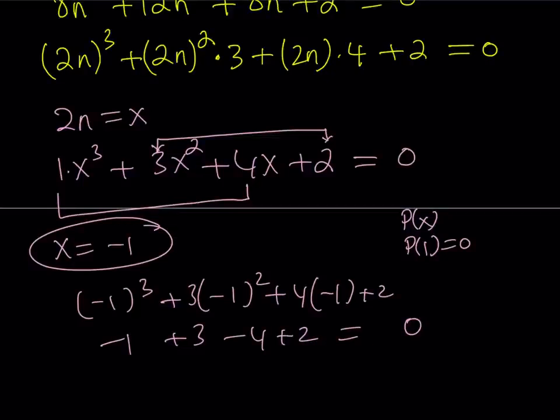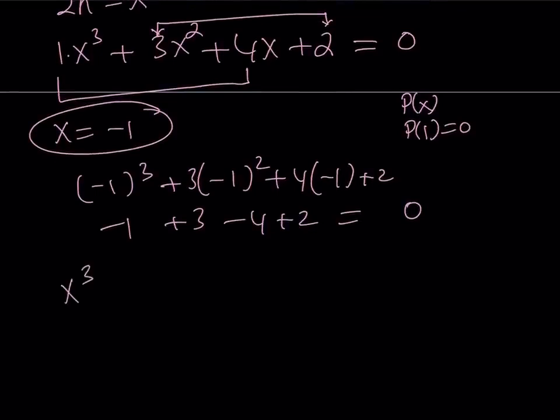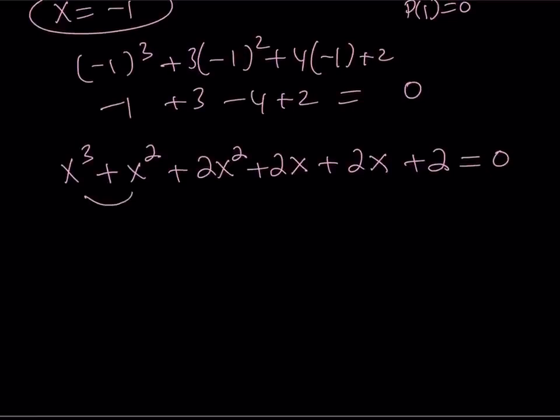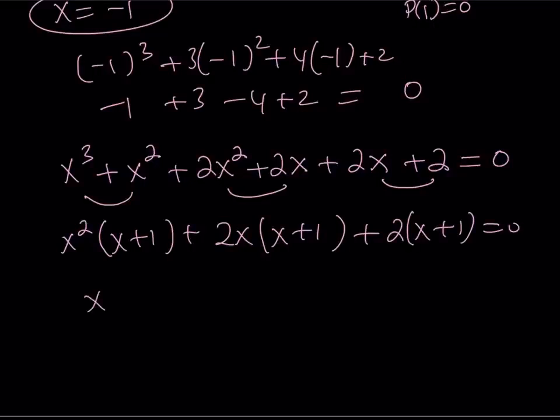So x = -1 is a solution of this equation, which is really nice because we can reduce the power. Let's go ahead and arrange these terms to reflect that. This is divisible by x + 1, which means x + 1 is a factor. We can factor by grouping: x²(x + 1) + 2x(x + 1) + 2(x + 1) = 0. So (x + 1)(x² + 2x + 2) = 0.